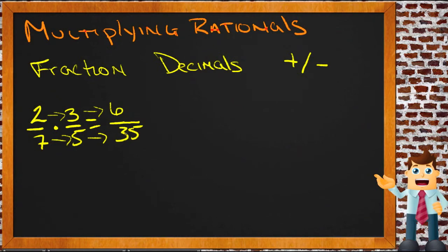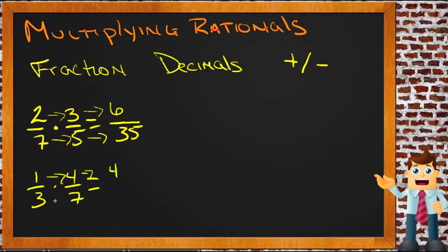If the result reduces, you should simplify it, but it doesn't always reduce — if it doesn't, just leave it as written. Another example: 1/3 times 4/7. 1 times 4 is 4, and 3 times 7 is 21, so 4/21 is the answer. Pretty straightforward.